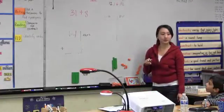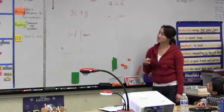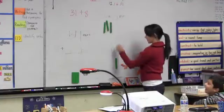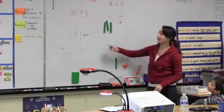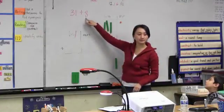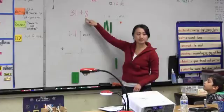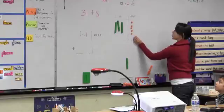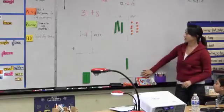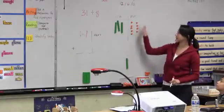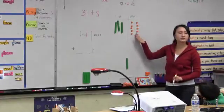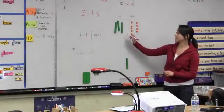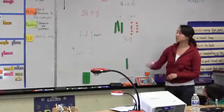I wonder if I need to regroup here. Let's see — thirty-one plus eight. I'm going to build thirty-one: ten, twenty, thirty, thirty-one. Now I'm going to add eight more ones — one, two, three, four, five, six, seven, eight. Here's my answer — thirty-one plus eight is right here. I only have nine ones. Do I need to regroup? No. So my answer is three tens and nine ones — thirty-nine.